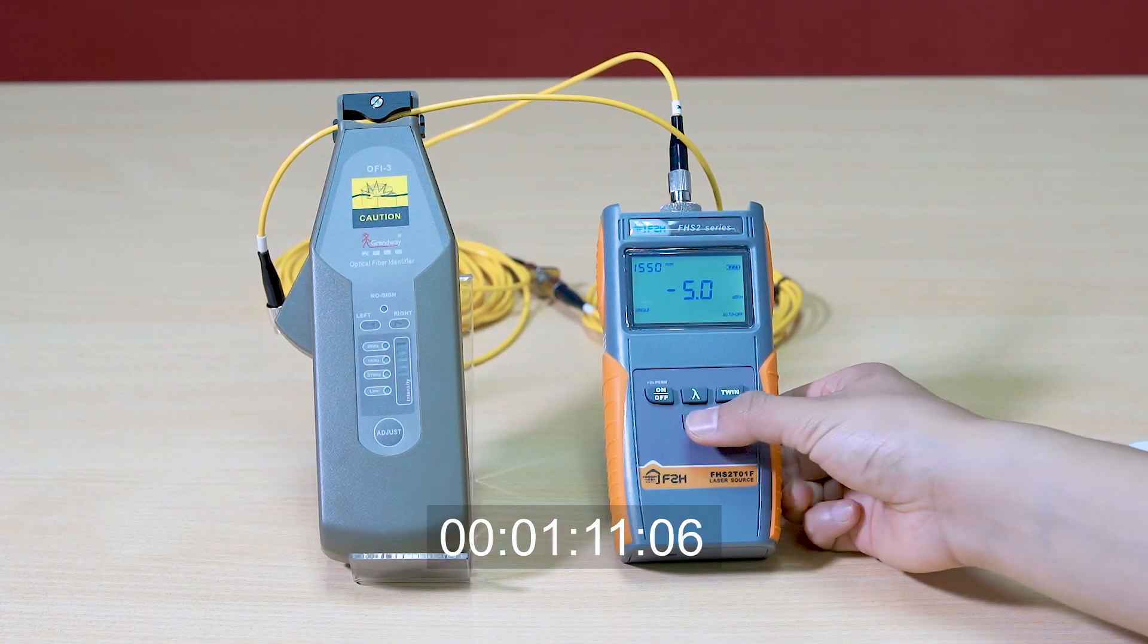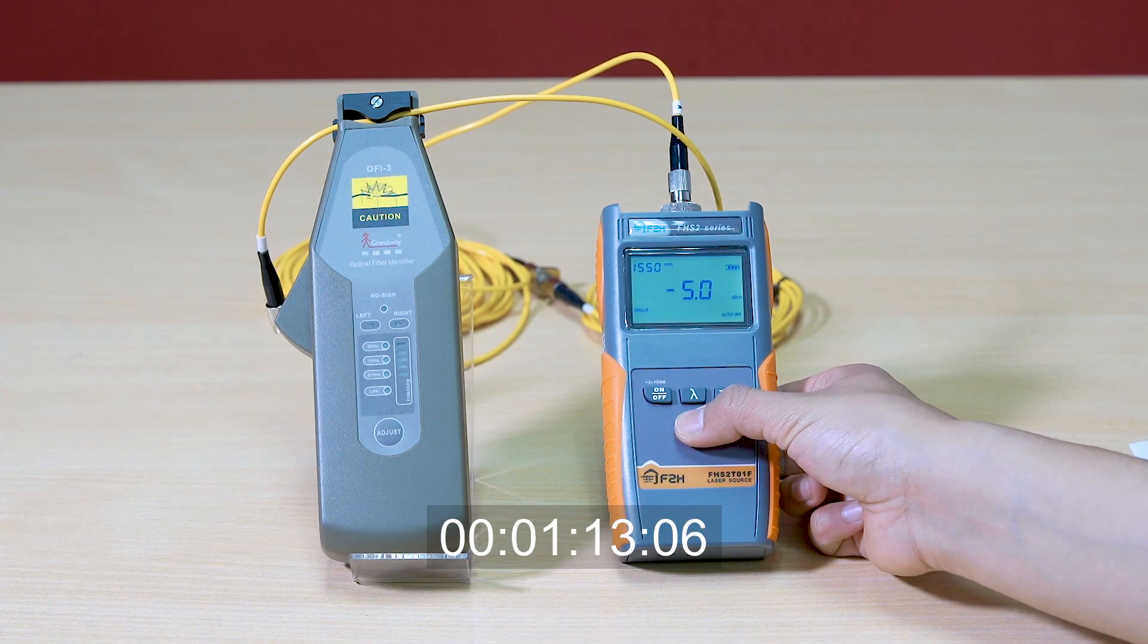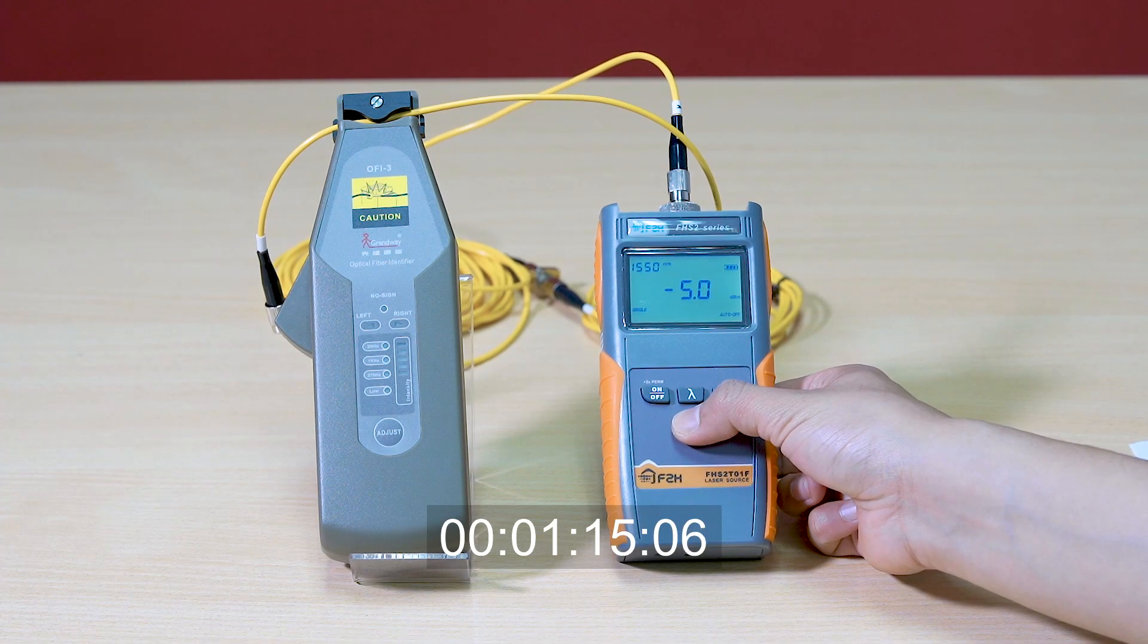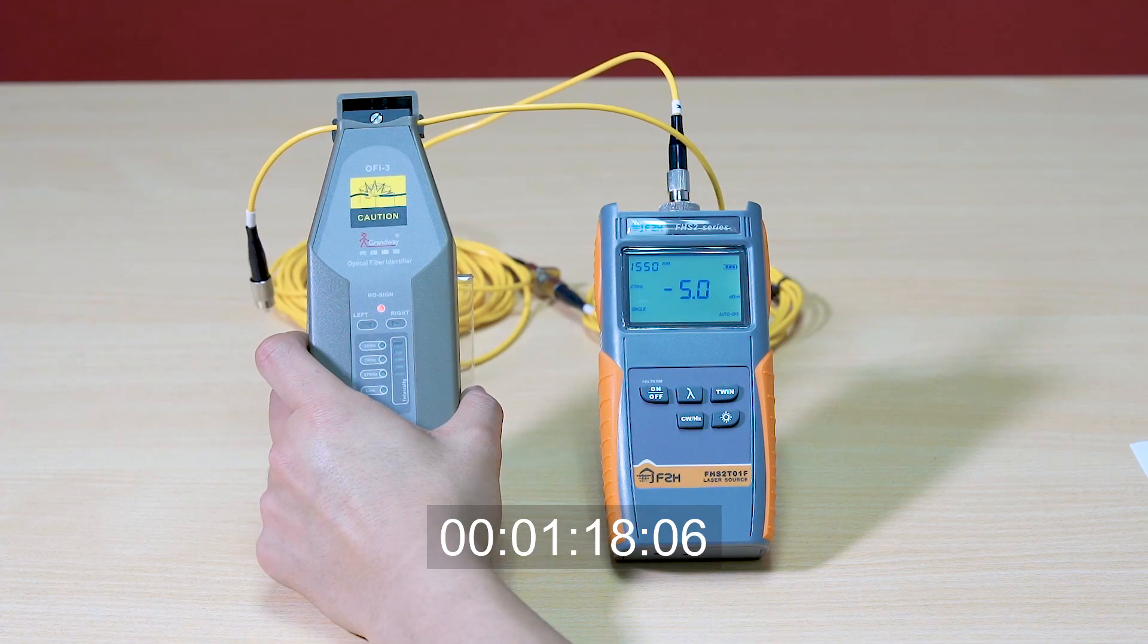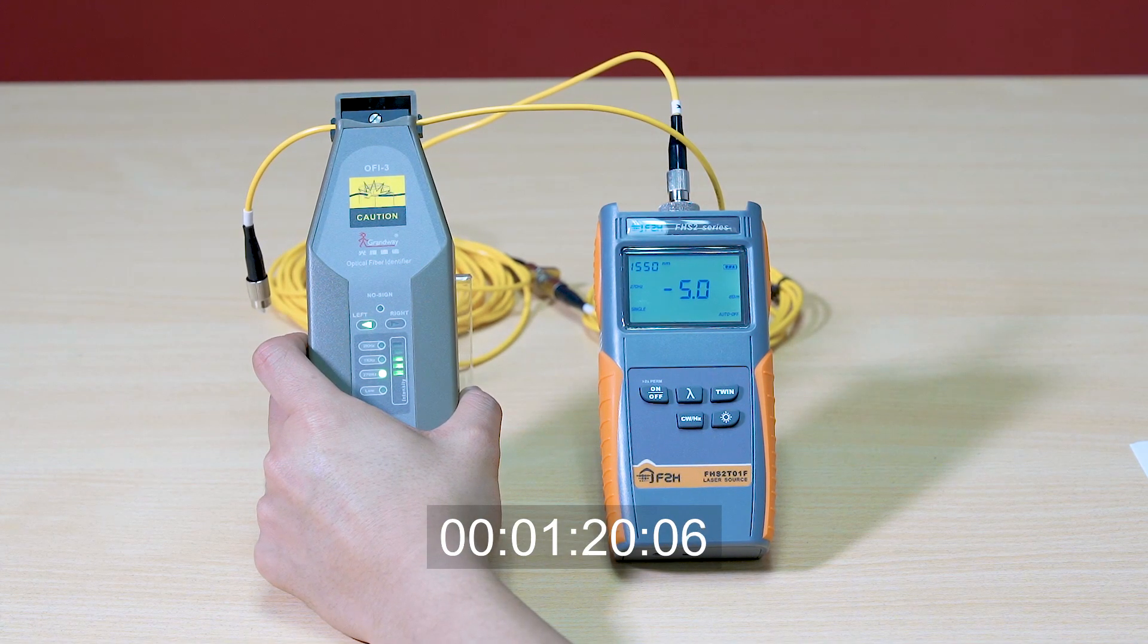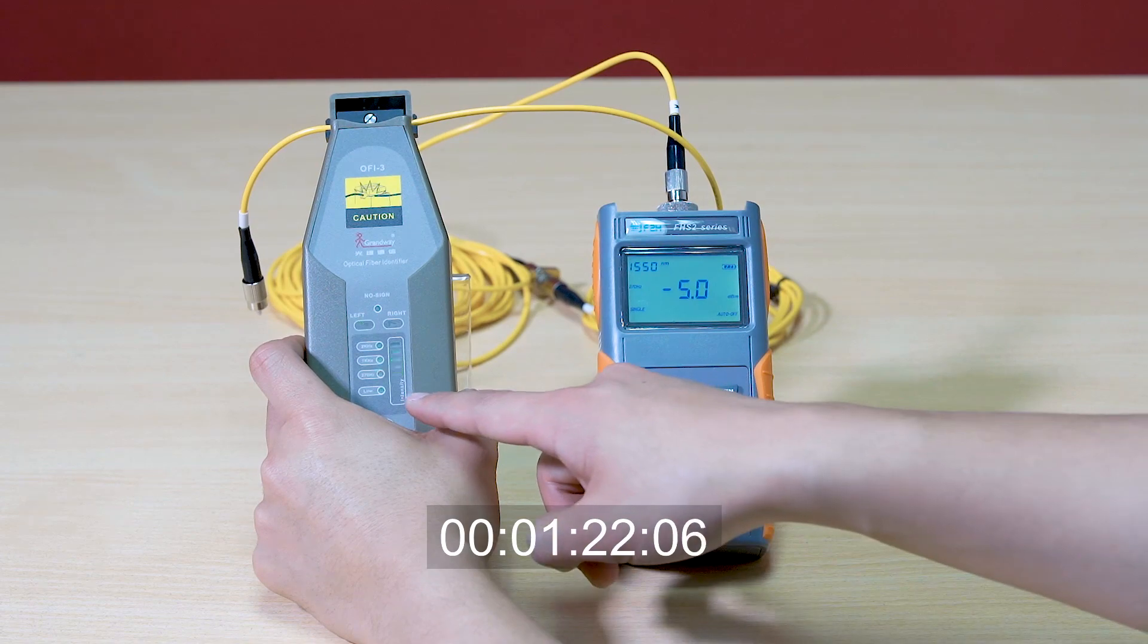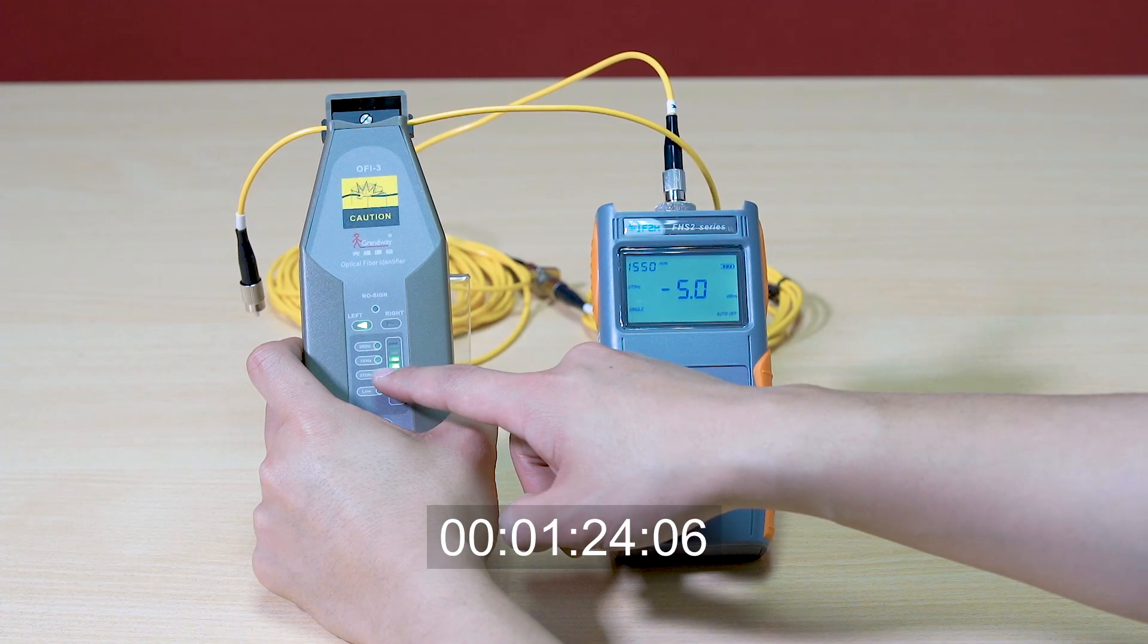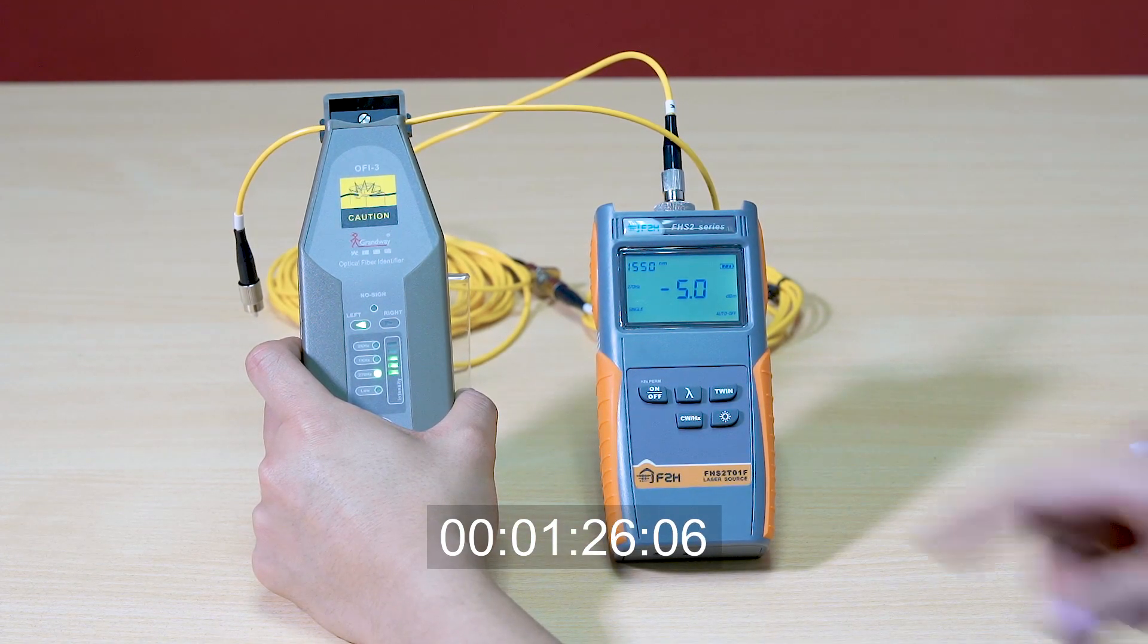Press CW to add the frequency to the output signal. The respective modulation blinks and the instrument makes a sound.